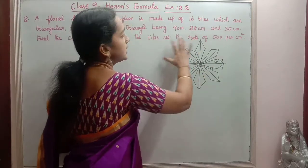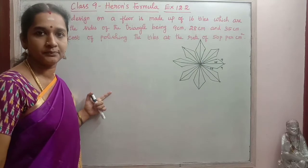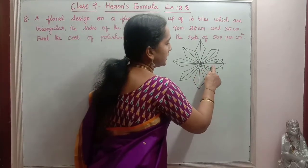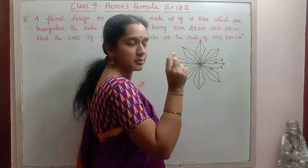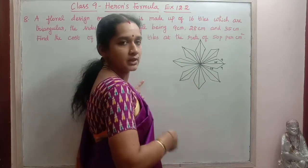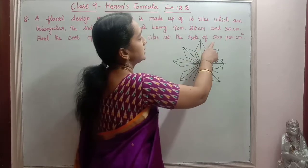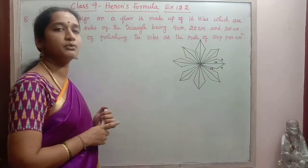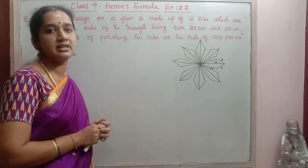That is the whole thing at the rate of 50 paise per cm square. So first we will find the area of one triangular piece. Then we will multiply it by 16 to find the whole 16 triangular pieces. Then we will find the rate for 50 paise per cm square.